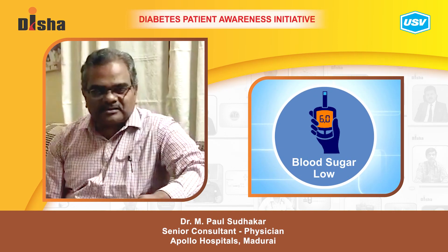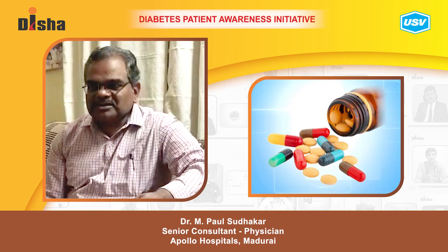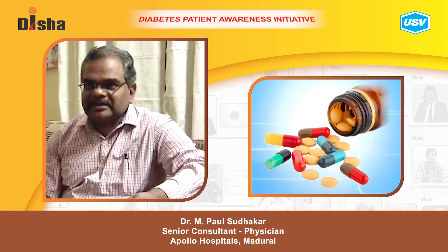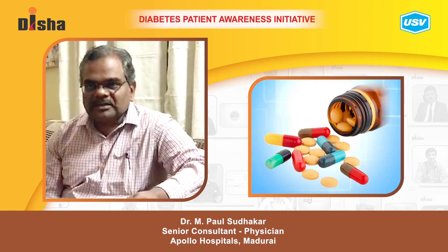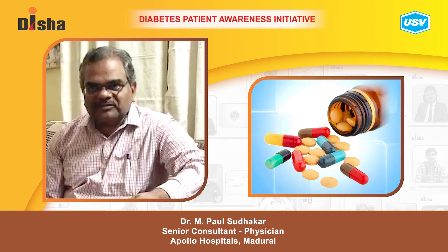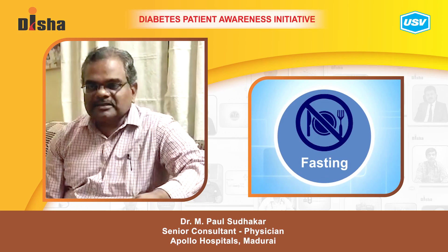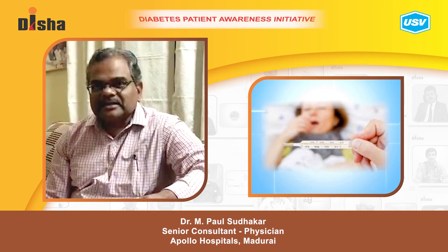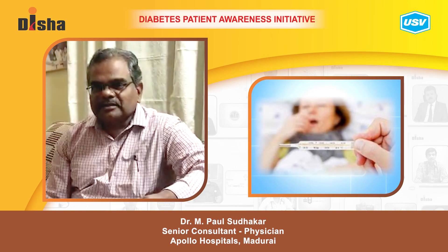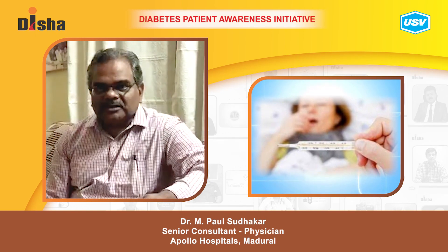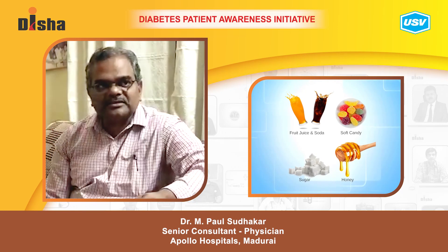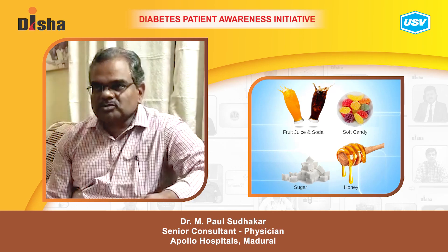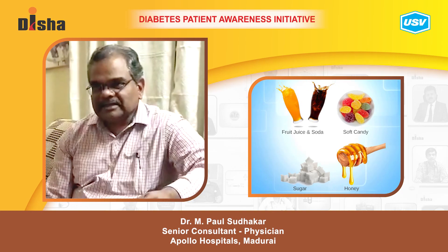The causes of hypoglycemia are mostly due to drug misuse. Some patients may take an excessive dose of oral tablets without their knowledge, or they take tablets and skip meals. Any sickness such as fever, diarrhea, or vomiting can also cause hypoglycemia. Management is to immediately take high-sugar glucose or sugary drinks.